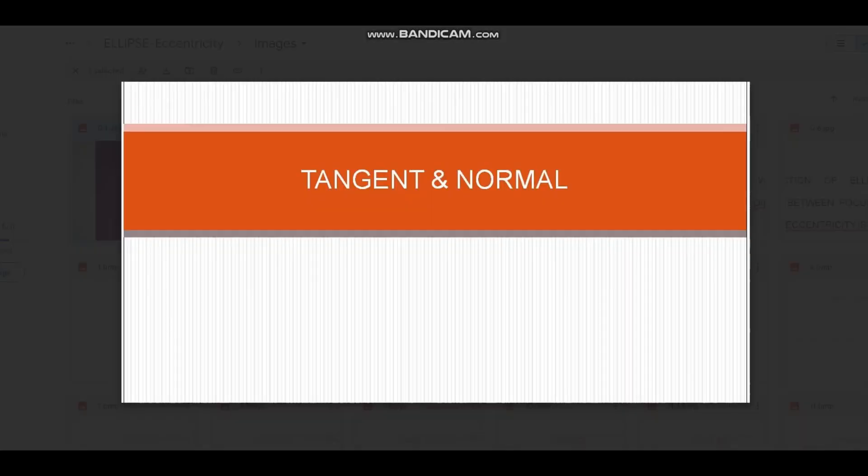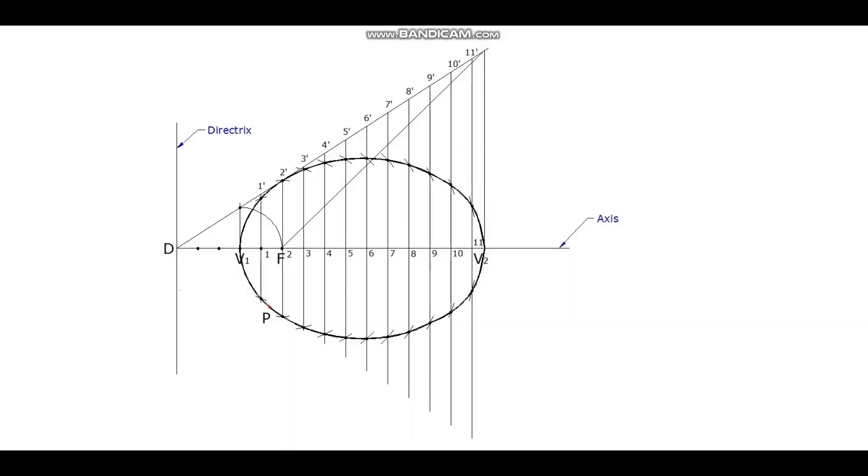To draw tangent and normal, mark any point P through which tangent and normal is to be drawn. Join P with focus point F. Draw a line from F perpendicular to line PF to meet it on the directrix. Let this meeting point be T.